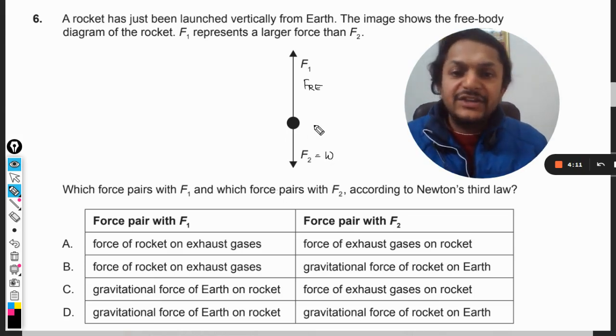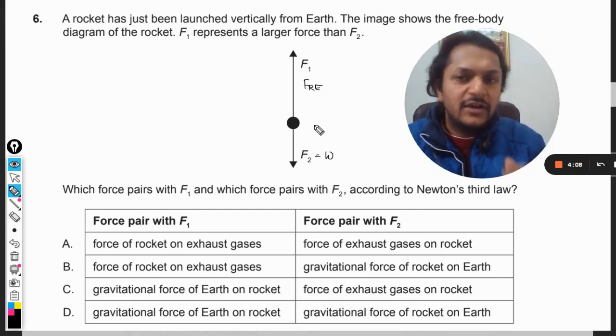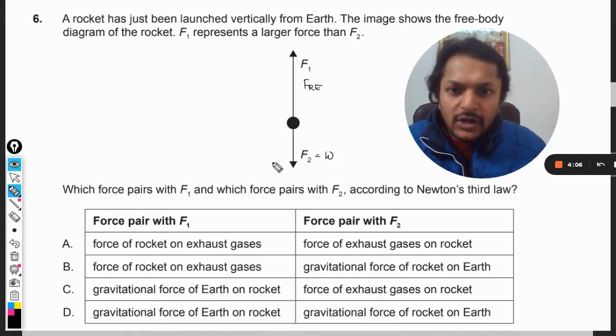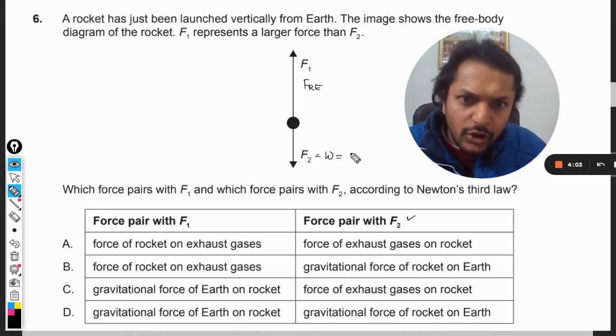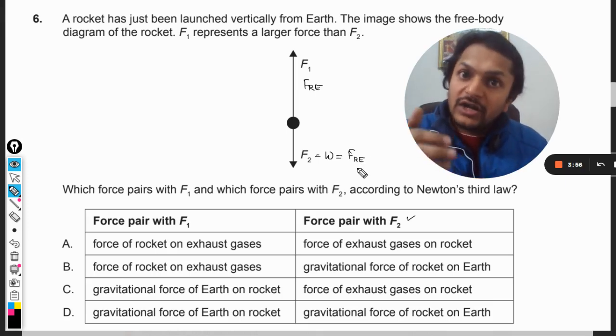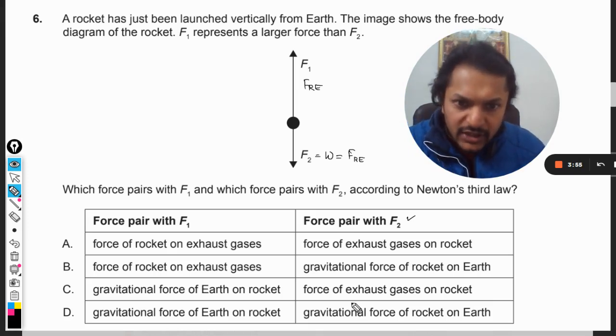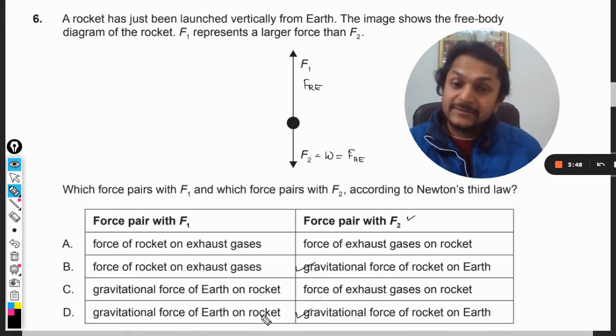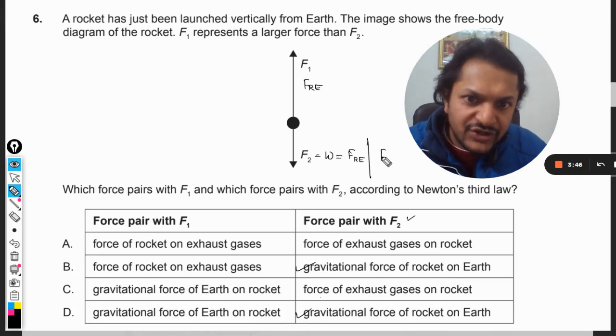Let us first talk about weight because it will be easy. You can call this the force on the rocket by Earth, so the reaction for this will be the force on Earth by the rocket. So gravitational force on the Earth by the rocket, yes. So either this or this, if this is the action, the reaction will be FER. You just need to switch these two points.